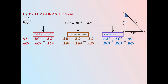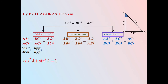Now looking at the triangle with respect to angle A, AB / AC is the ratio of the adjacent side to the hypotenuse, and BC / AC is the ratio of the opposite side to the hypotenuse. Applying trigonometric ratios, we get cos²A + sin²A = 1, which is the first trigonometric identity.